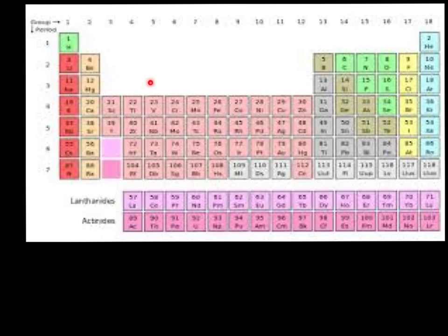Period 2 has a few more elements. Period 3 has the same amount. And then we get down to periods 4 through 7 that go all the way across the table with elements.